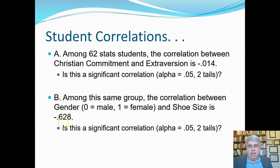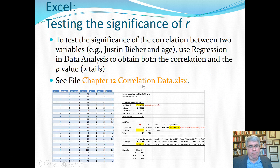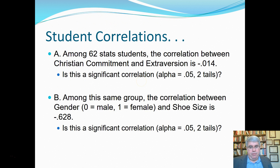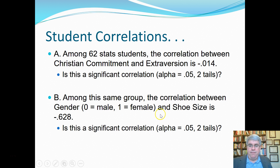Is this a significant correlation using alpha equals 0.05, two tails? With 62 students, degrees of freedom equals 62 minus 2, which is 60. The critical value for df equals 60, two-tailed, alpha 0.05 is 0.250. The absolute value of minus 0.628 is 0.628, which is larger than 0.250. Yes — this is a significant correlation. We can be 95% sure that the average shoe size for males is larger than the average shoe size for females.